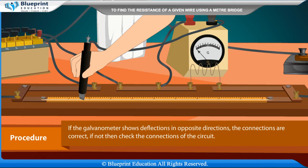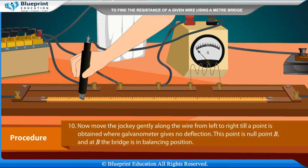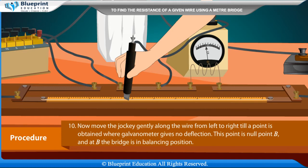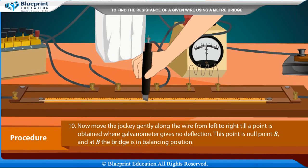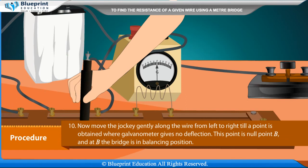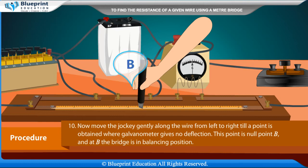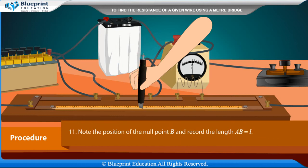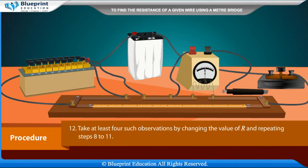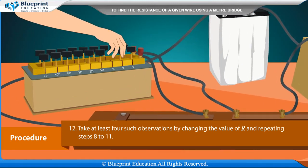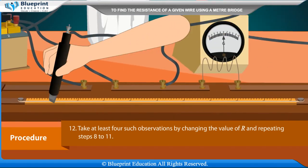If not, then check the connections of the circuit. Now move the jockey gently along the wire from left to right until a point is obtained where the galvanometer gives no deflection. This point is the null point B, and at B the bridge is in the balancing position. Note the position of the null point B and record the length AB = L. Take at least 4 such observations by changing the value of R and repeating the steps.